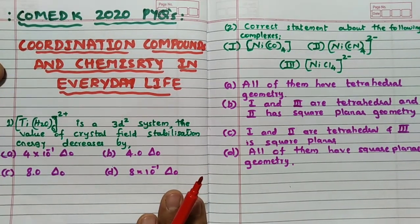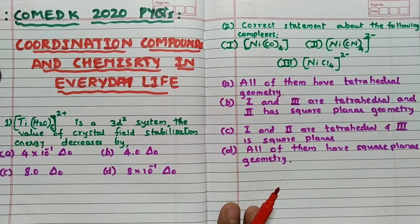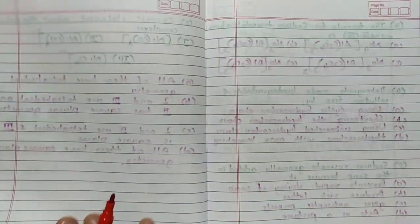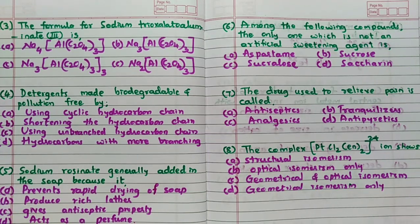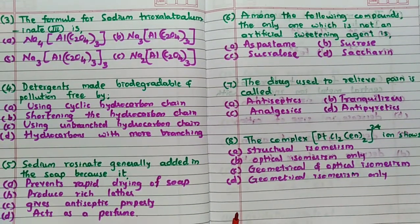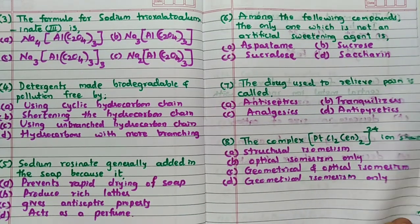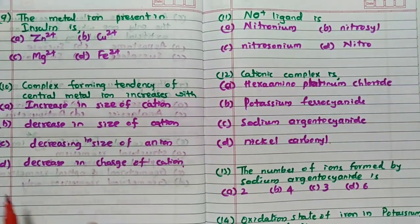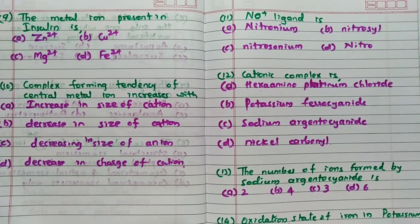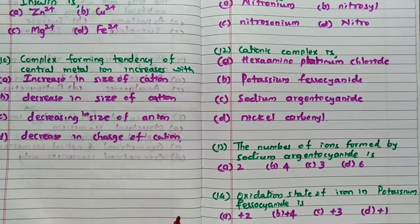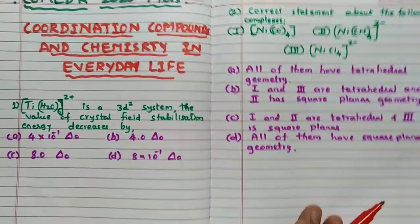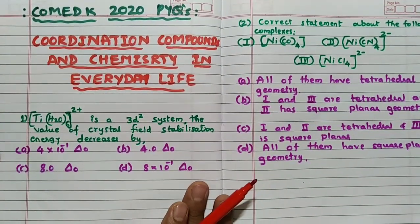So before going to start, if you want you can take the screenshot of this. So here you can see first question and the second question, two questions, then 3, 4, 5, 6, 7, 8. After this 9th, 10th, 11th, 12th, 13th and 14th question I will show you now. These are the 13th question up to this and the 14th question is this one. So let us start with COMED K previous year coordination compound chapter.